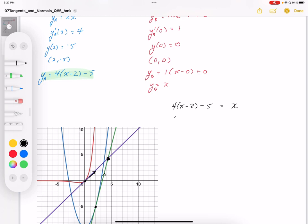So I end up with 4x minus 8 minus 5 equals x. 3x equals 13. And so the x coordinate is going to be 13 over 3. And then plugging it back into the equation, that's y equals x, so y equals 13 over 3 as well. So that would represent the coordinate of the intersection of those two tangent lines.